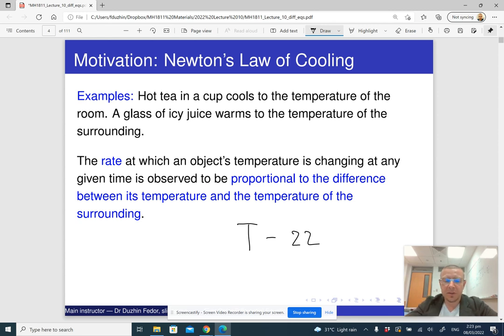So the temperature of the tea minus the temperature of the room is T capital minus 22. Now, what is the rate of change of the temperature of my cup of tea? So it is dT capital dt small. This is the rate at which my cup of tea's temperature is changed. So it's proportional to the difference. So it is some coefficient K times the difference between T minus 22.